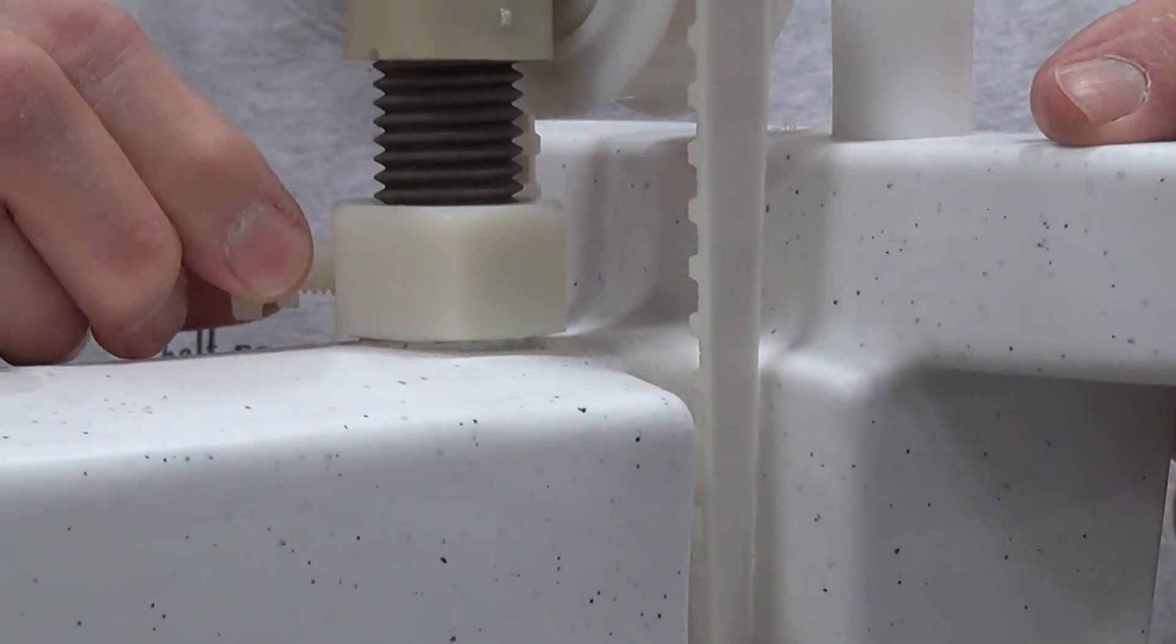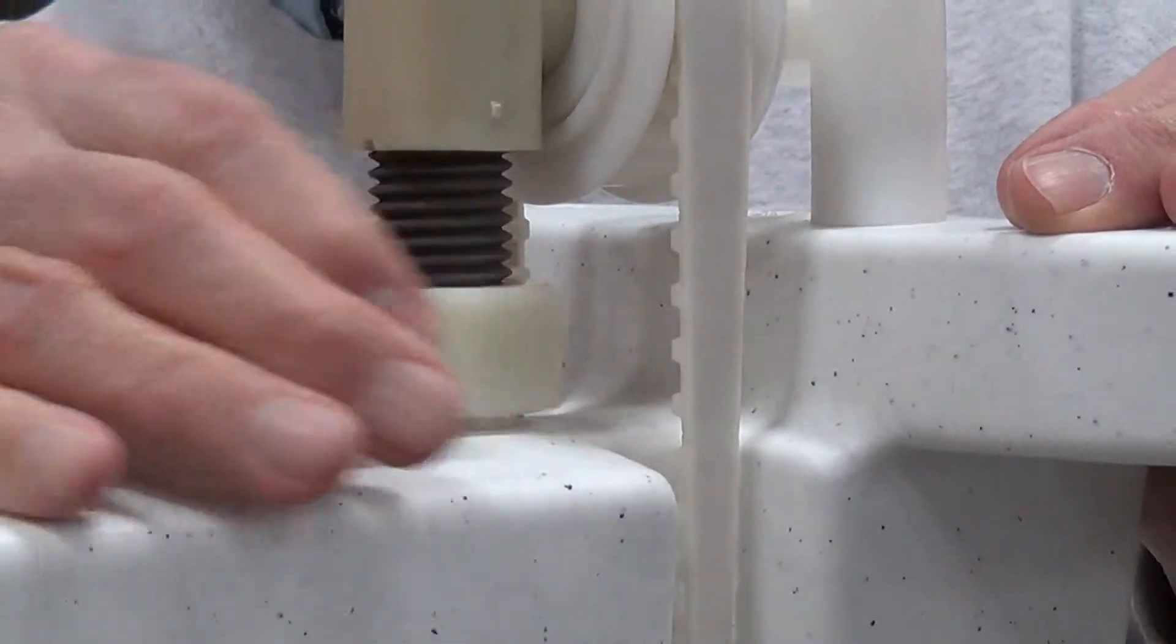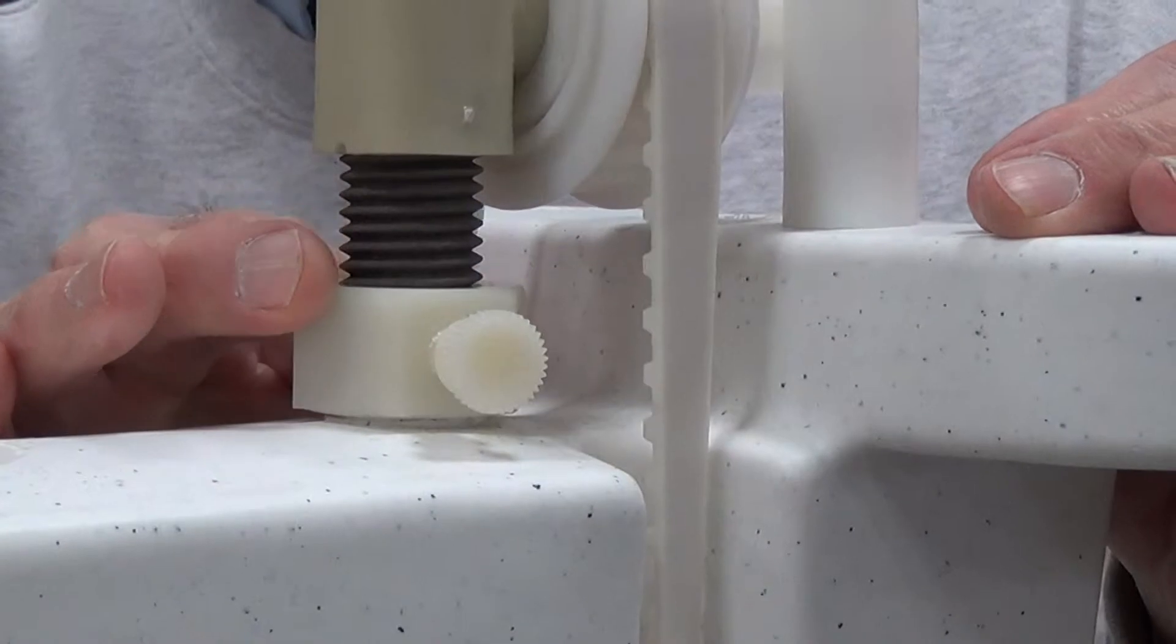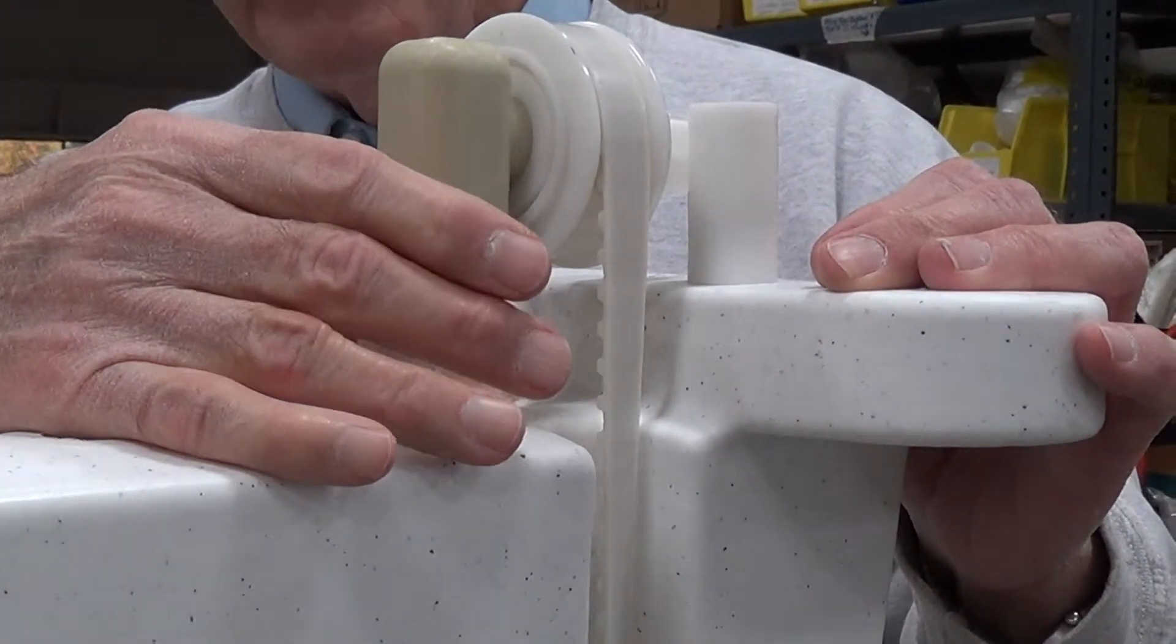So you just loosen the thumb screw, unscrew it, make sure that it turns freely and easily. That loosens up the belt so you can prepare to properly tension the belt.